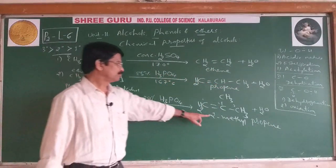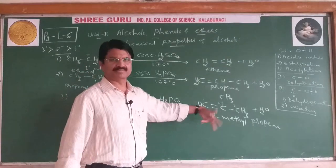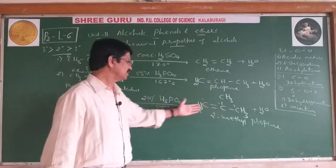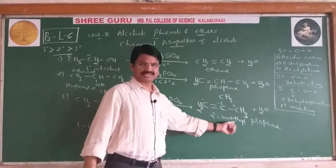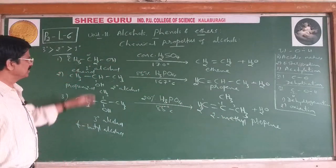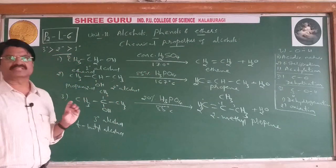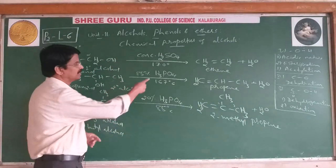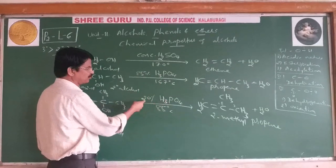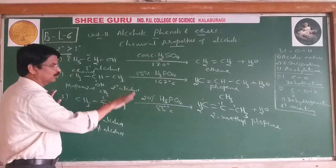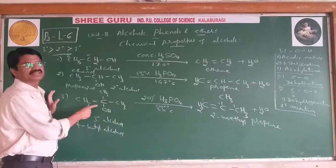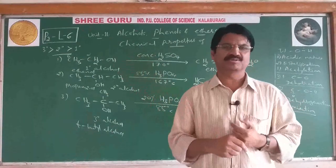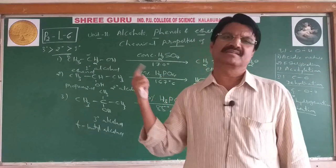A common exam question: name the product formed when t-butyl alcohol undergoes dehydration. The answer is 2-methylpropene. In all three cases, we did not need to apply Zaitsev's rule (CSF rule) because there were equal H atoms on both sides. But note the conditions: 85% H3PO4 for primary, only 20% H3PO4 for tertiary — even in dilute medium, tertiary alcohol undergoes easy dehydration.